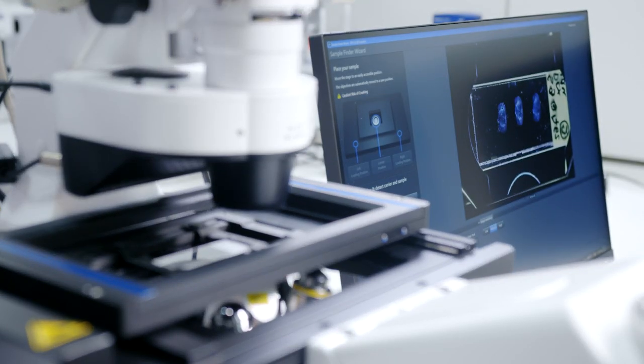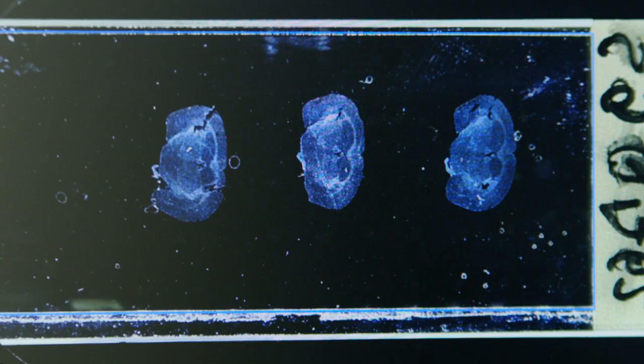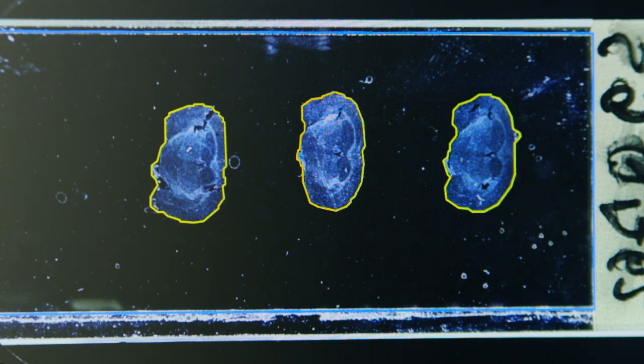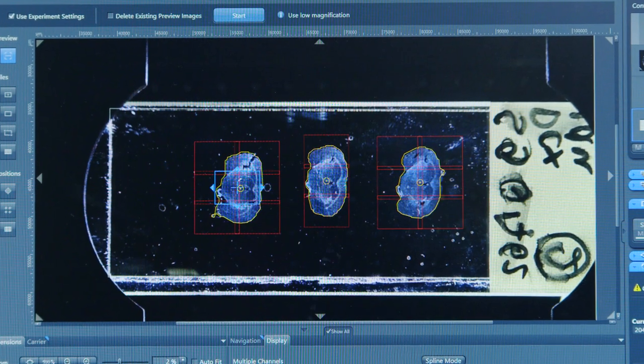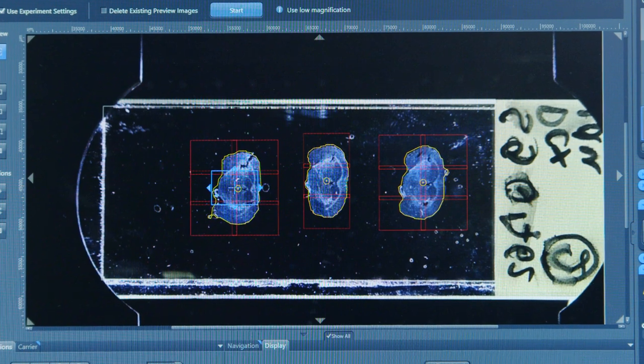Artificial Intelligence will automatically detect the type of sample carrier and coverslip used and locate your sample within the coverslip area. Regions of interest are created and can be edited if necessary.